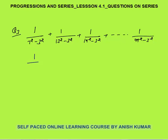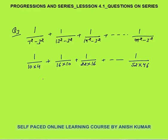I know that A²−B² = (A+B)(A−B). So 7²−3² = (7+3)(7−3) = 10×4. Then 13²−3² = (13+3)(13−3) = 16×10. Then 19²−3² = (19+3)(19−3) = 22×16. And 49²−3² = (49+3)(49−3) = 52×46. So the series becomes 1/(4×10) + 1/(10×16) + 1/(16×22) + ... + 1/(46×52).